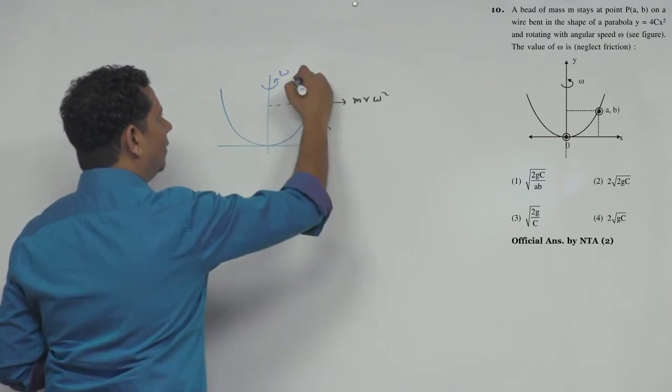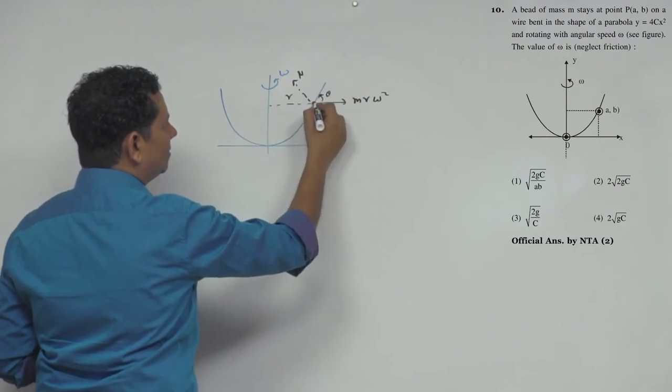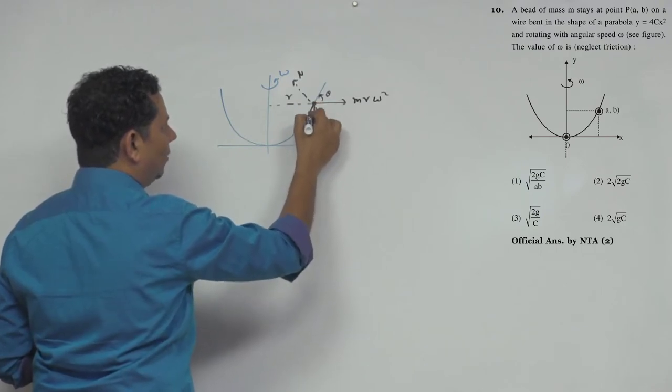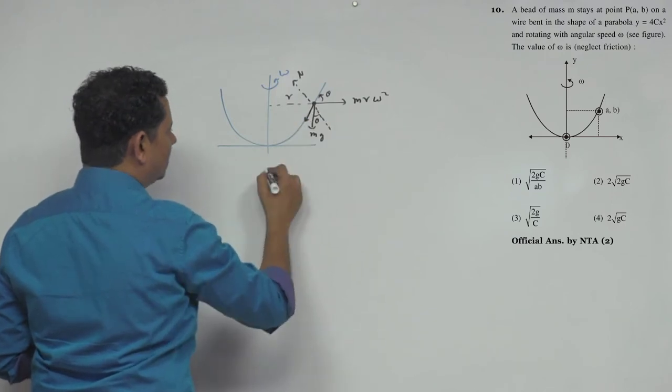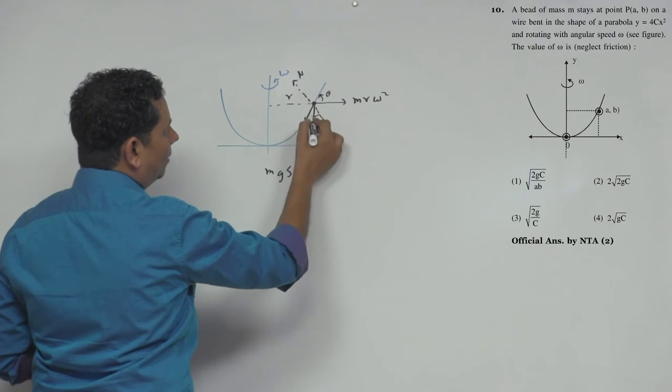One component will balance the normal force, and the other component is mg sin θ, which will balance this component here.